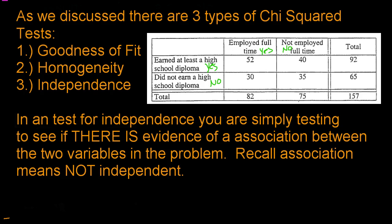What we're trying to see is: is there independence between these two variables? Remember what independence means — independence means that one variable does not impact the other. So having a diploma has no impact on having a full-time job, or vice versa. The opposite of independent is no independence, which means there is an association — one variable has some type of impact on the other.